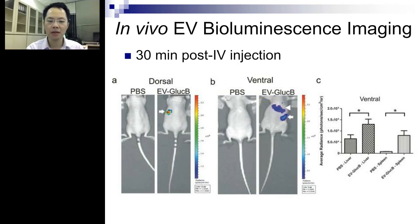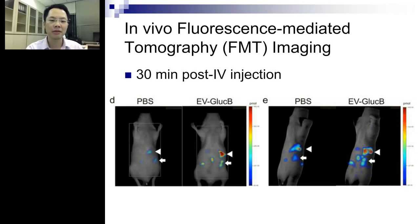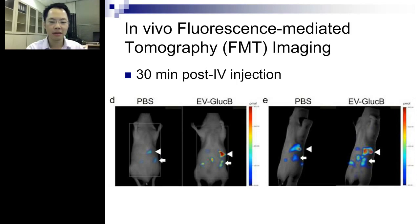We also tested multimodal imaging capability using fluorescence-mediated tomography (FMT). Isolated vesicles were conjugated to Alexa Fluor 647 via streptavidin, then injected intravenously. Half an hour later, FMT imaging showed the liver and spleen lighting up, consistent with bioluminescence findings. 3D rendering of FMT images again confirmed liver and spleen signal, with PBS controls showing only background fluorescence.